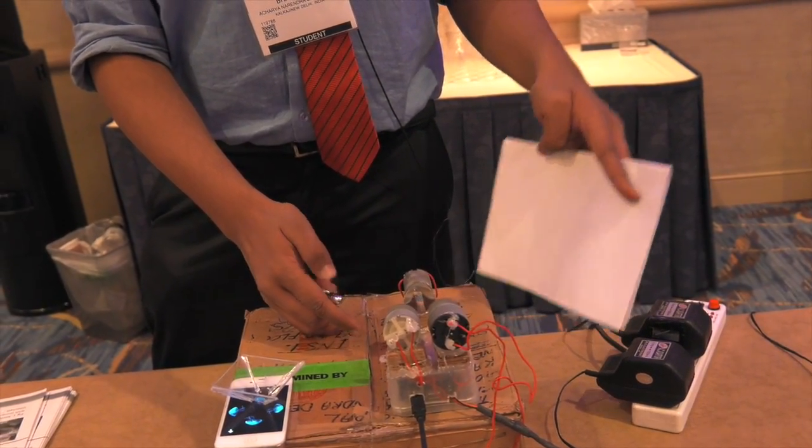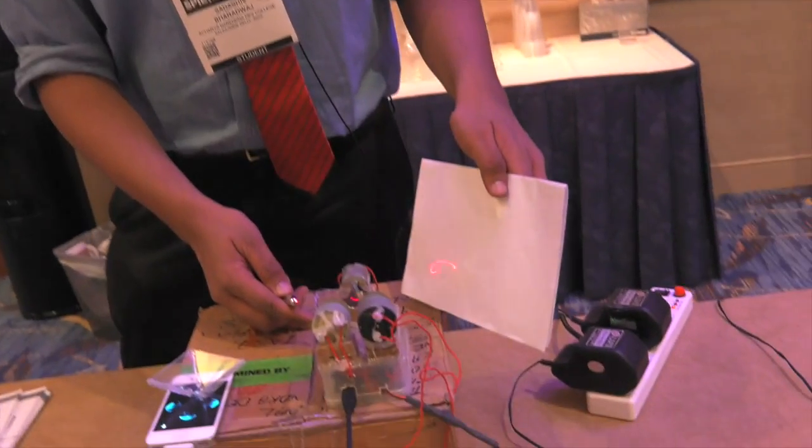You can change the pattern in two ways. Either you can change the tilt angle of the motor or you can change the speed of the motor. So since changing the tilt angle of the motor is a difficult task, we change the speed using the microcontroller. And we get the Lissajous patterns.